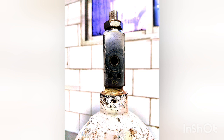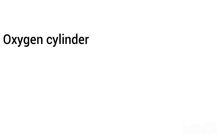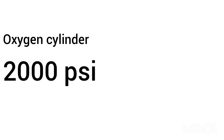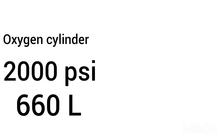Looking into the oxygen cylinder, it has a pressure of 2,000 psi (pounds per square inch), containing 660 liters of oxygen. The pressure in the oxygen cylinder falls in proportion to the content — that is, the oxygen volume. So if the cylinder gauge is showing 1,000 psi, that means there is half of the oxygen in the cylinder, that is around 330 liters of oxygen.